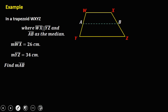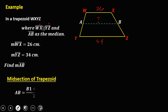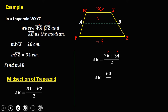In trapezoid WXYZ, WX is parallel to YZ, so these are the bases, and AB is the median. The measure of WX is 26 and YZ is 34. To solve for line AB, using the midsection formula — (base one plus base two) divided by 2 — we get 26 + 34 = 60, divided by 2. Therefore, the midsection AB is equal to 30 centimeters.